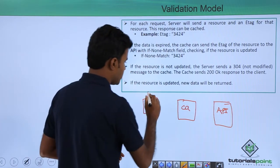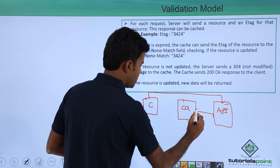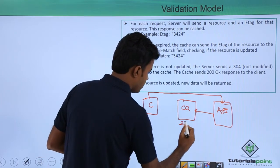The first time I send a request to the API, the API sends the response to the cache and the data is cached for 2500 seconds.